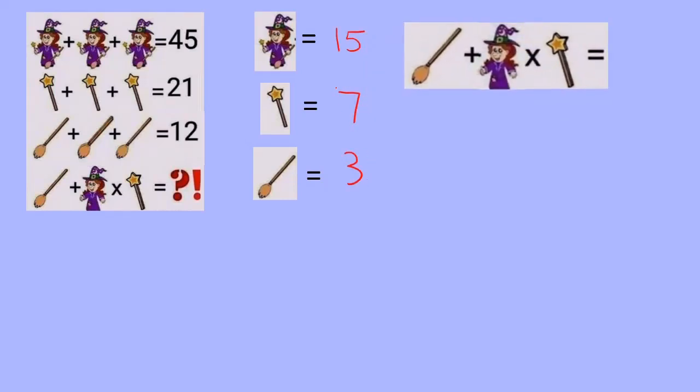And we've got to figure out first what this witch without a broom or a wand is going to be worth. So with both, she's worth 15. We're going to take away seven because she does not have a wand. We're going to take away another three because she doesn't have a broom. So the witch on her own is worth five.